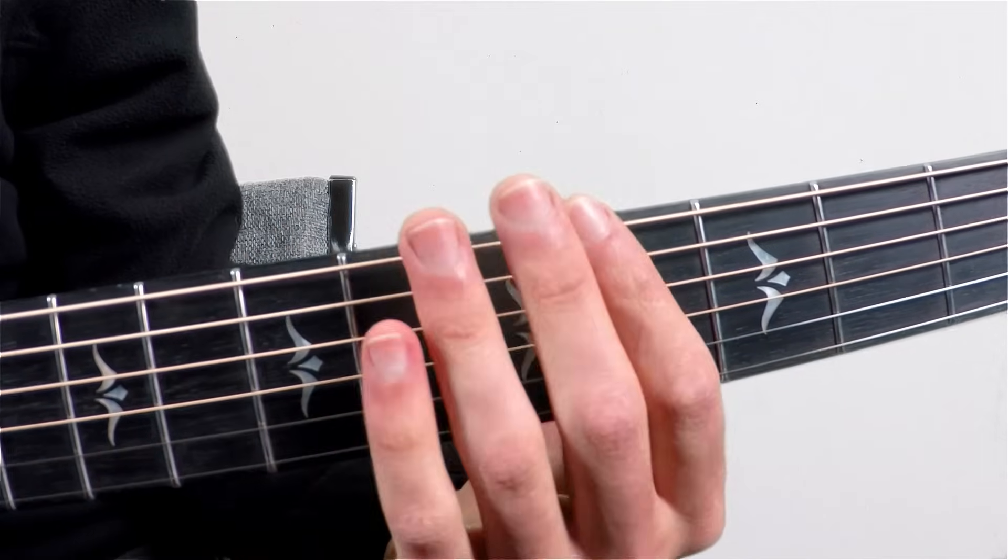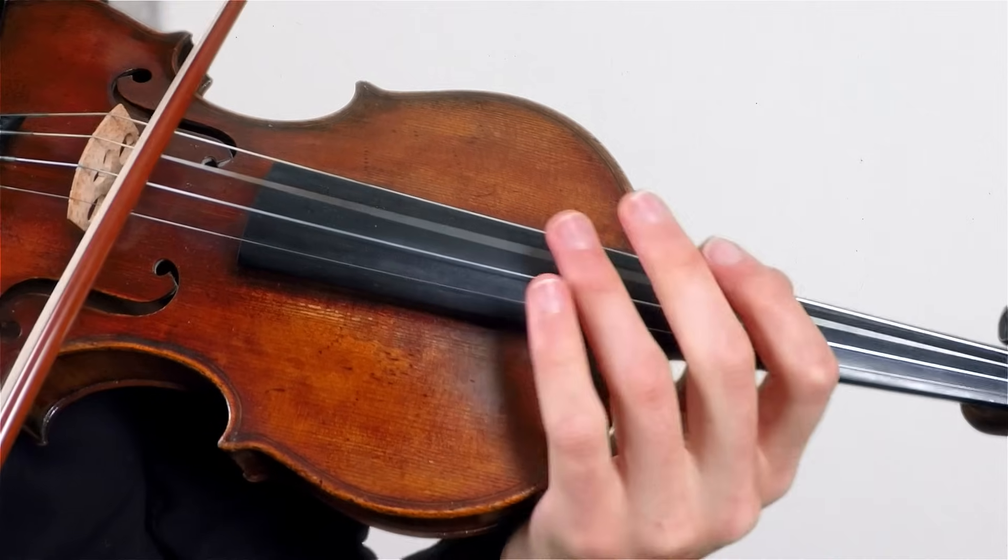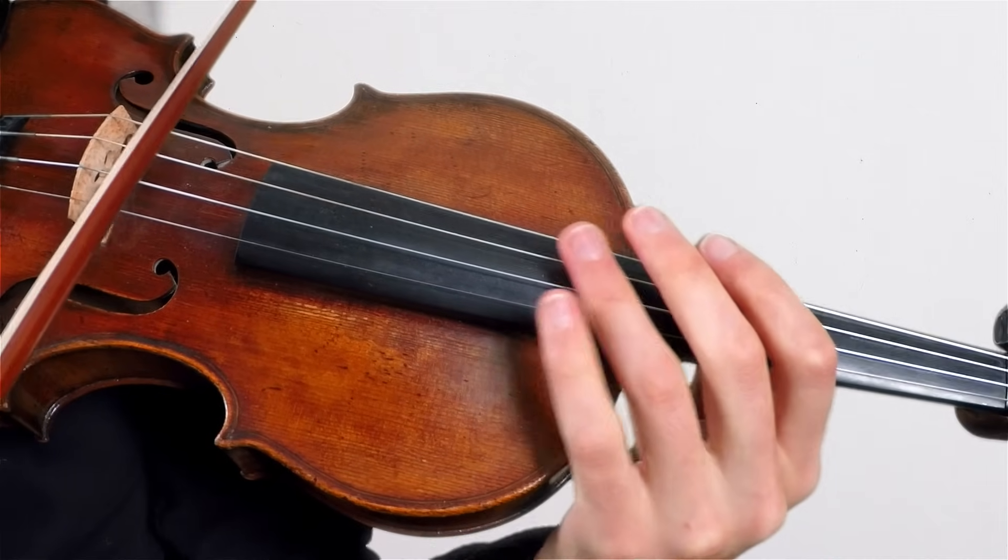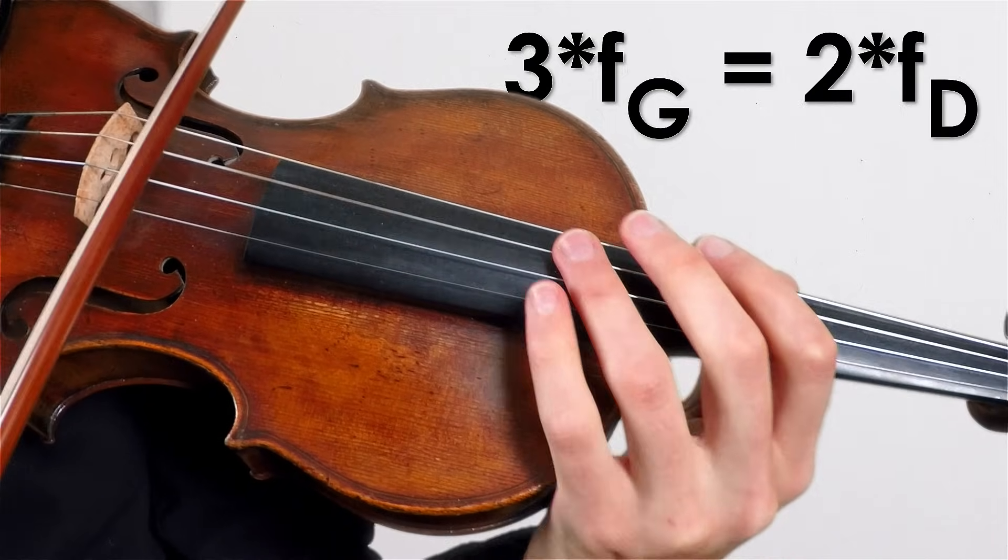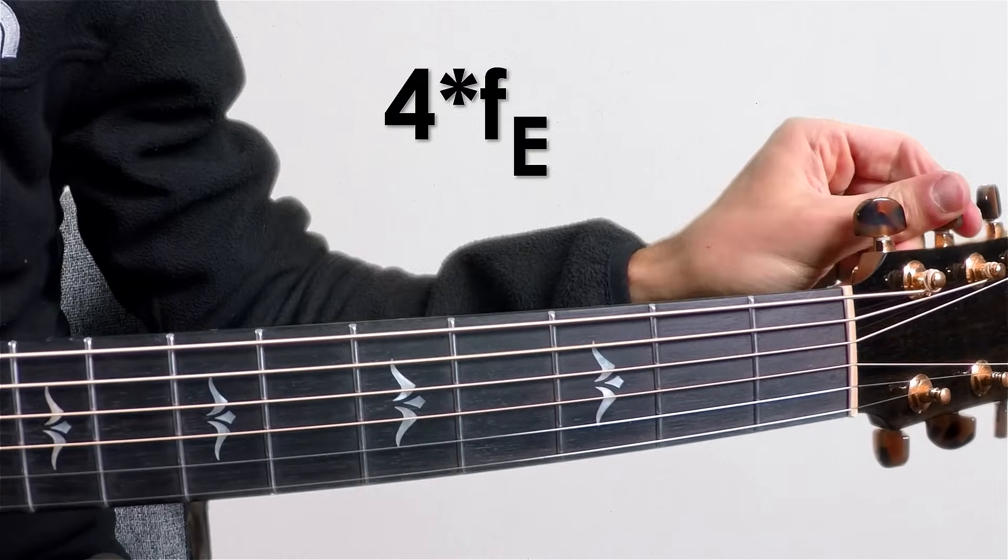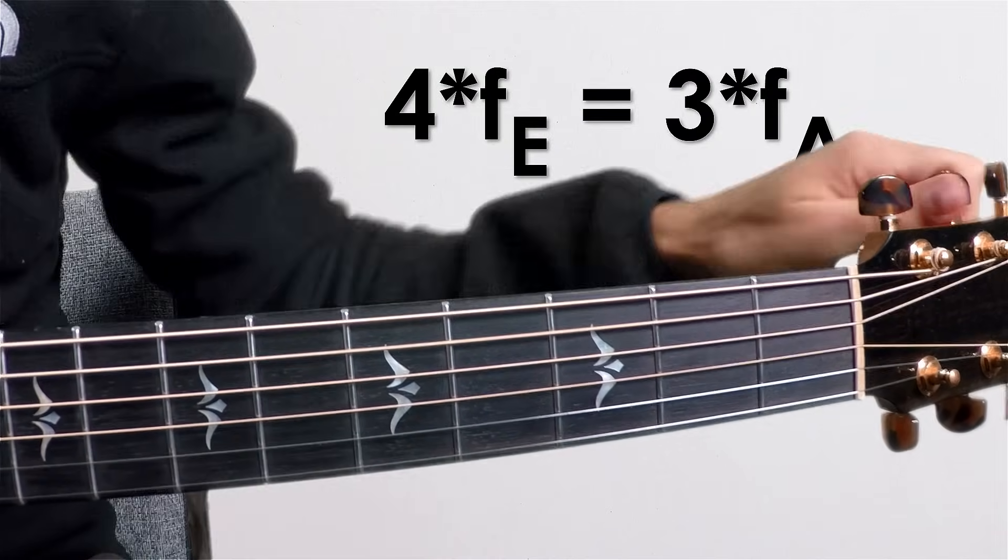Harmonics can also be used to tune string instruments. For example, on a violin, viola, or cello, the third harmonic on one string should be equal to the second harmonic on the next string up. Bassists and guitarists can compare the fourth harmonic to the third harmonic on the next string up.